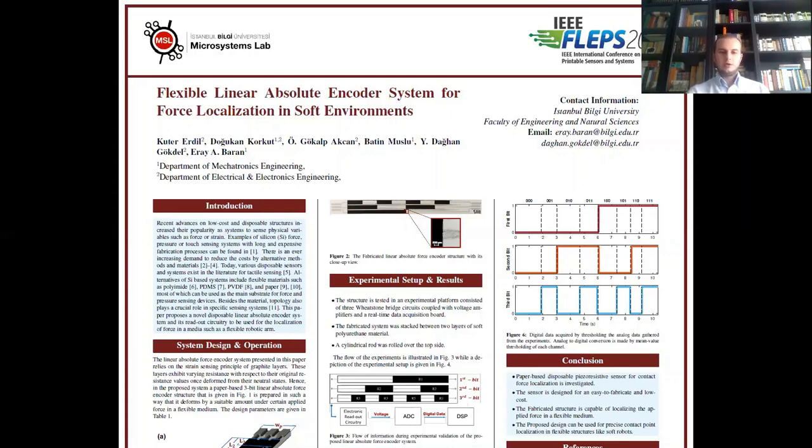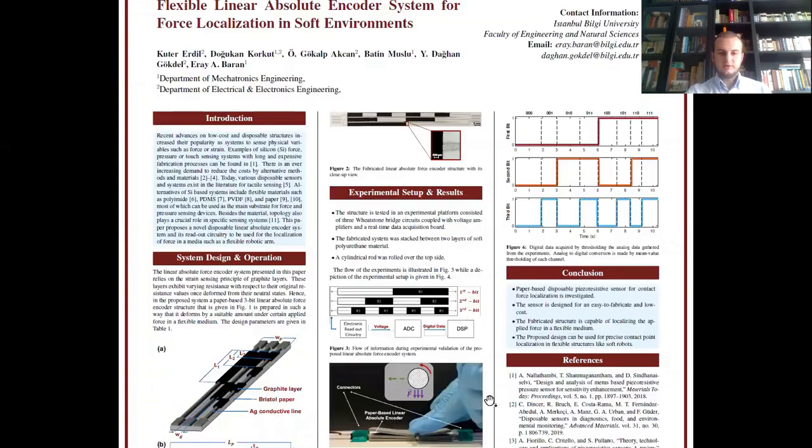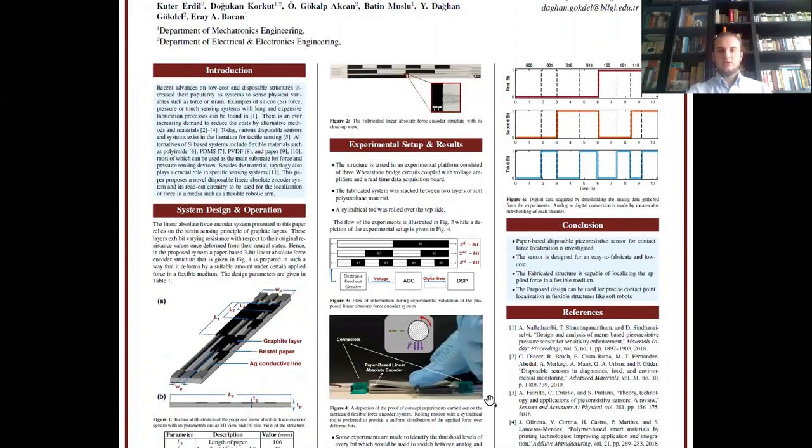You can see that in figure one, it is the proposed structure, the linear absolute encoder system that consists of graphite, silver and paper. And in figure two is the fabricated structure.